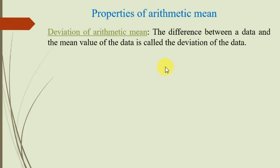Deviation کا ترجمہ کیا جائے تو اس کو ہم کہتے ہیں انحراف۔ انحراف means data جو ہے وہ اصل میں جو mean value ہے، average ہے، اس سے کتنا انحراف کرتے ہیں اور کس direction میں — اس سے کم ہے یا زیادہ ہے۔ So the difference between a data point and the mean value of the data is called the deviation of the data.